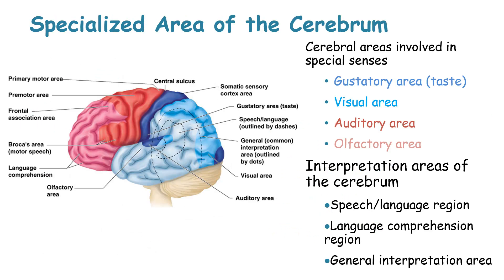The cerebral areas that are involved in spatial senses include gustatory areas for taste, visual areas, auditory areas and the olfactory areas. The cerebrum also has interpretation areas for speech recognition, language comprehension, and a general interpretation area.